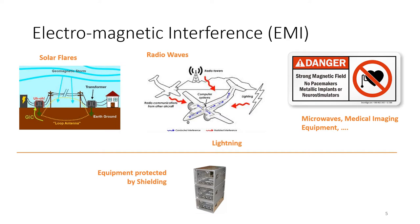Examples of this that system engineers have to worry about include solar flares, radio waves generated by man-made systems, lightning, and microwaves and other equipment that generates electromagnetic waves that can affect systems. An example on the right-hand side is that of a pacemaker. The solution to all of these phenomena is to protect the equipment with shielding.